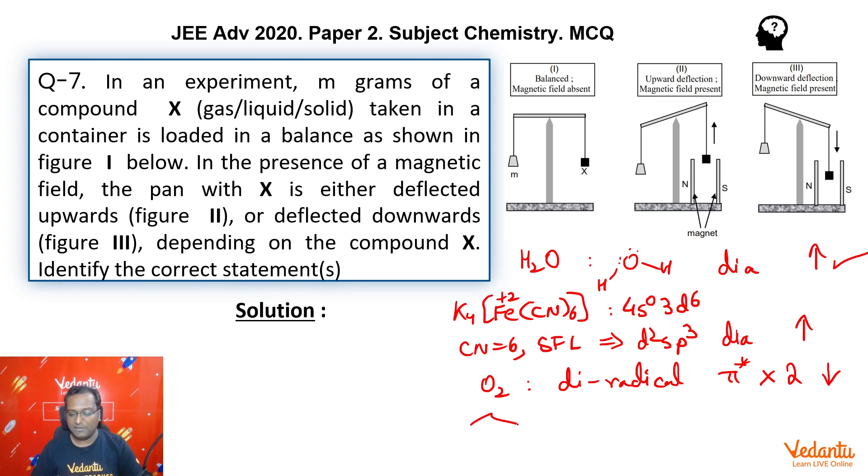Last one, benzene. Benzene is C6H6. In C6H6 all electrons are paired up. All electrons are paired and therefore this is diamagnetic. This will be deflected up.